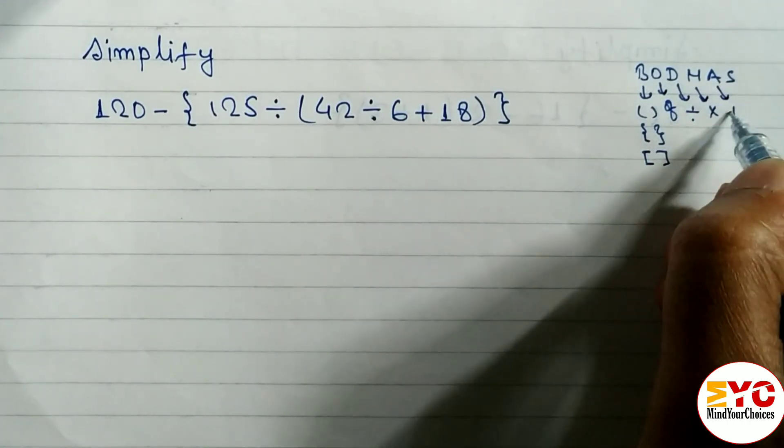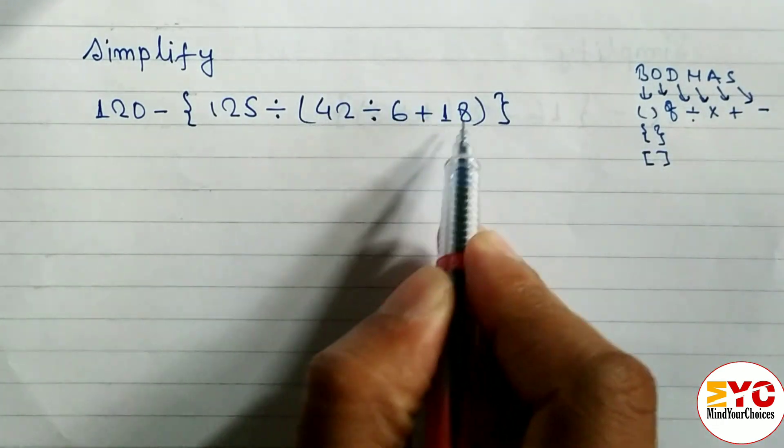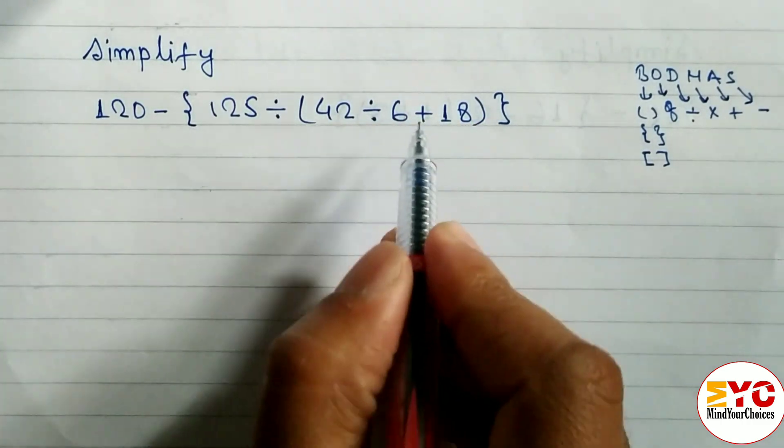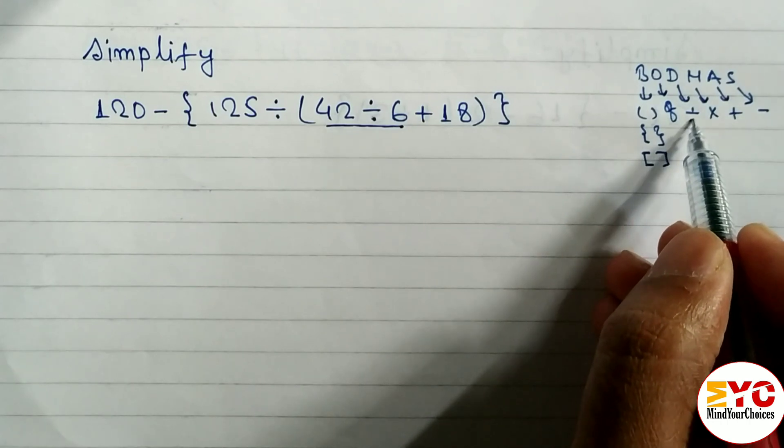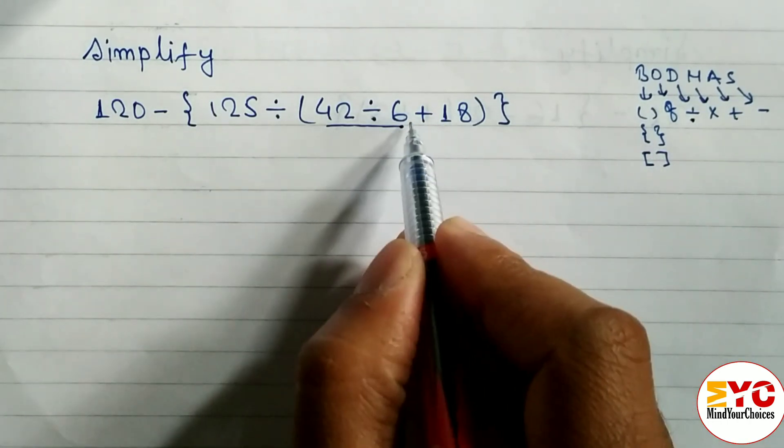You can see here inside the bracket, two brackets are given - one curly bracket, one small bracket. Inside the small bracket, first of all we have to divide. You can see here, first divide will come, then only addition. Addition is after, so first we have to divide, then only add.